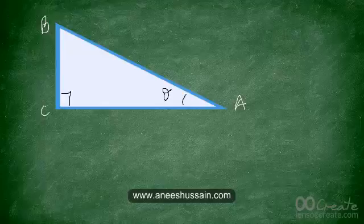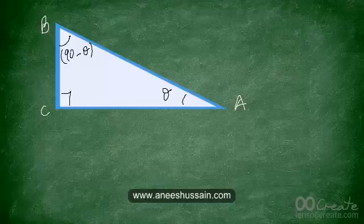We'll look at triangle ABC where one angle is marked as theta and angle C is equal to 90 degrees. The third angle must be 90 minus theta, because the sum of all three angles in any triangle is 180 degrees. If one angle is 90, the other two must add up to 90, so if one is theta, the other has to be 90 minus theta.